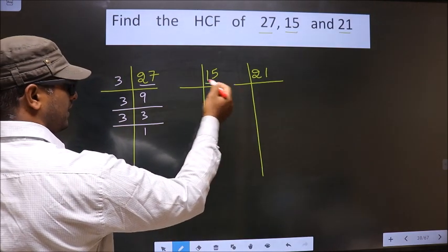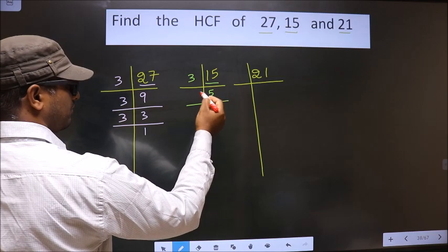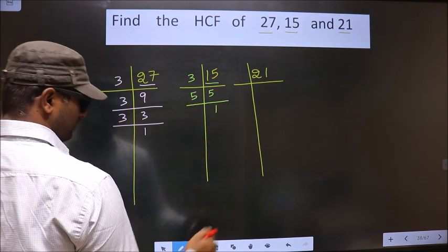Now here we have 15. 15 is nothing but 3 times 5. Now 5 is the prime number so we take 5 and 1.